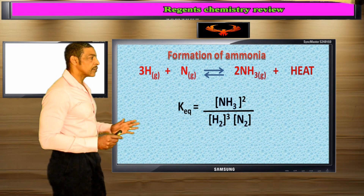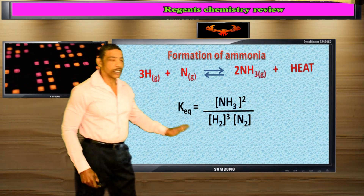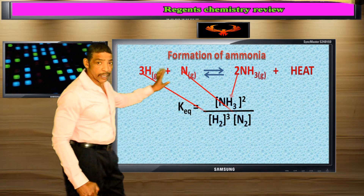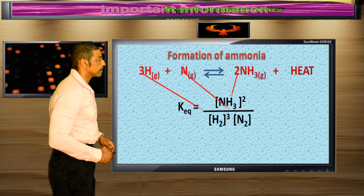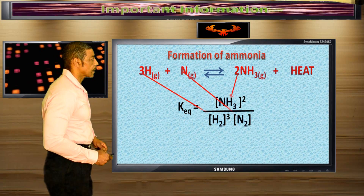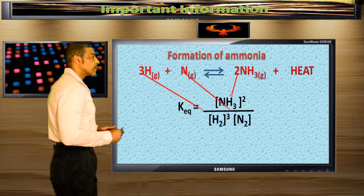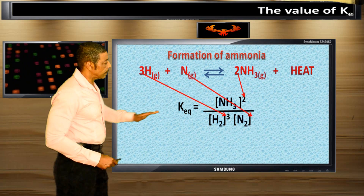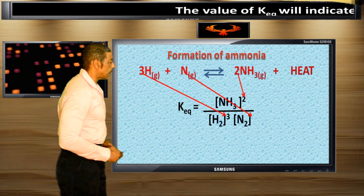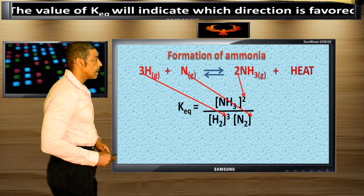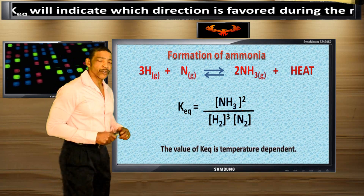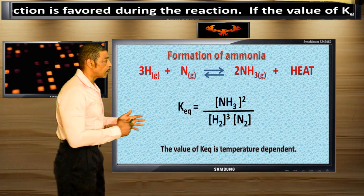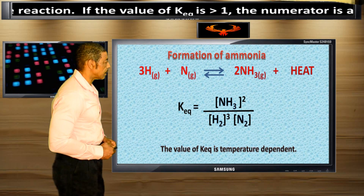Consider the K-EQ expression for the formation of ammonia gas from its elements. The reactants and products are placed within brackets, representing their molar concentrations. The coefficients from the balanced equation, however, are written as exponents in the expression.